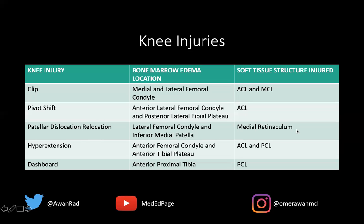The medial retinaculum will always be injured in a patellar dislocation relocation. In a hyperextension injury, you typically get marrow edema anteriorly at both the anterior femoral condyle and the anterior tibial plateau, and the ACL and PCL are injured. Finally, a dashboard injury presents with isolated bone marrow edema along the anterior proximal tibia, and the isolated PCL is injured. So depending on the five different bone marrow edema patterns, the soft tissue structure injured is different — important to remember the type of knee injury, the edema pattern, and the associated soft tissue injury.